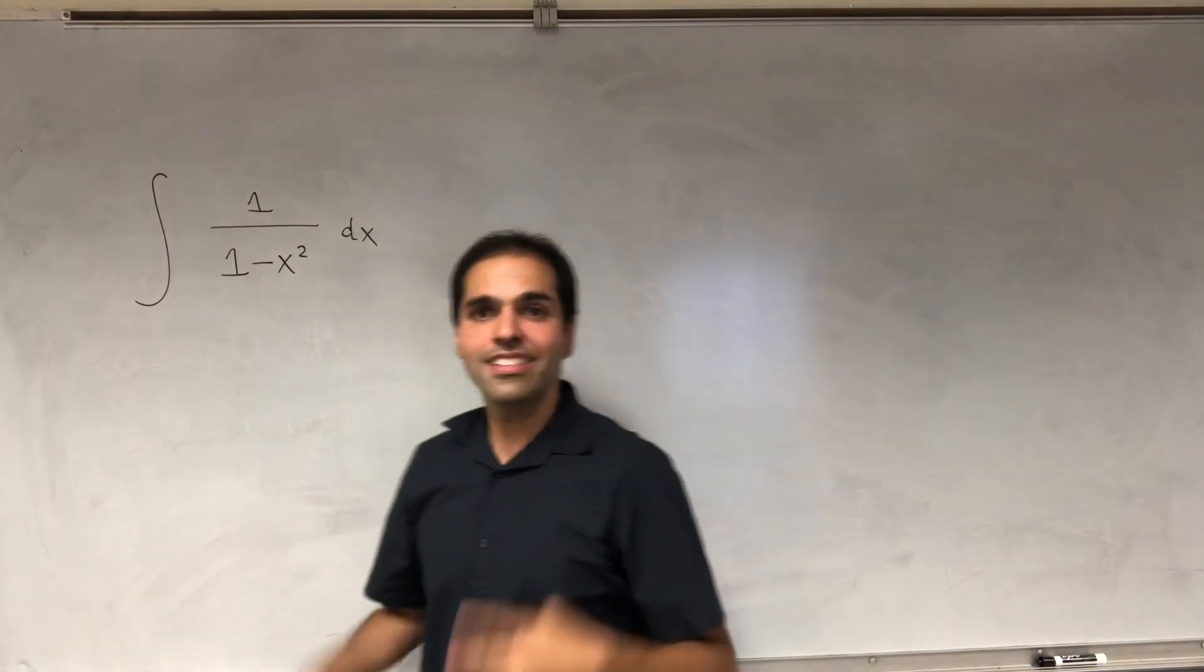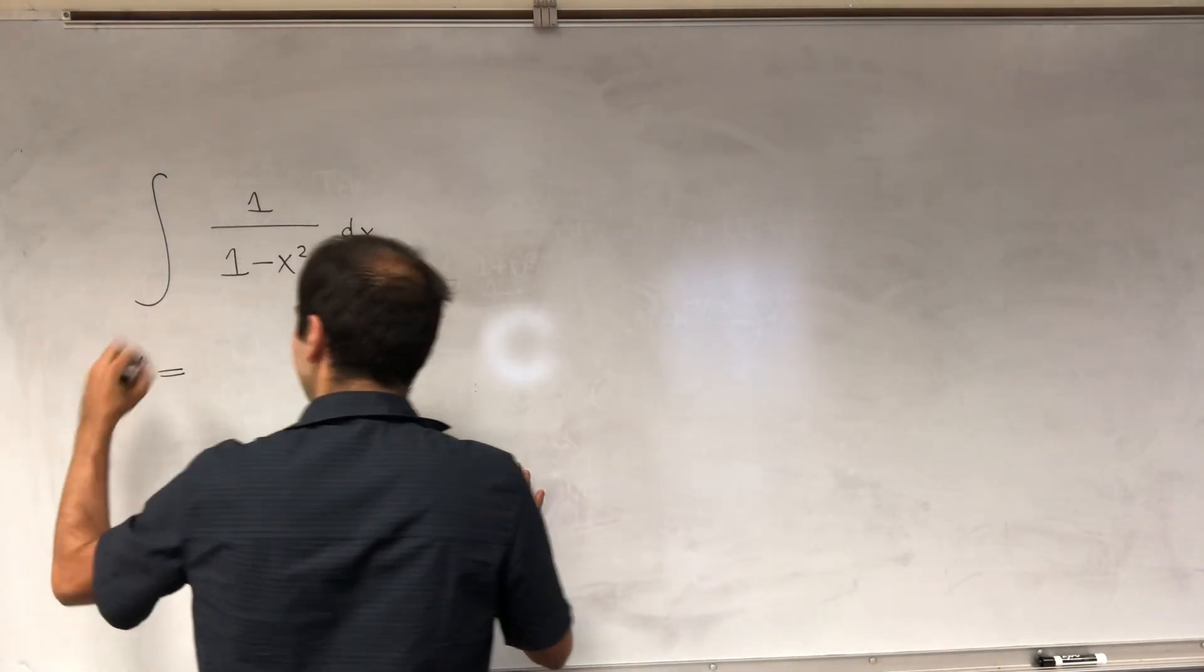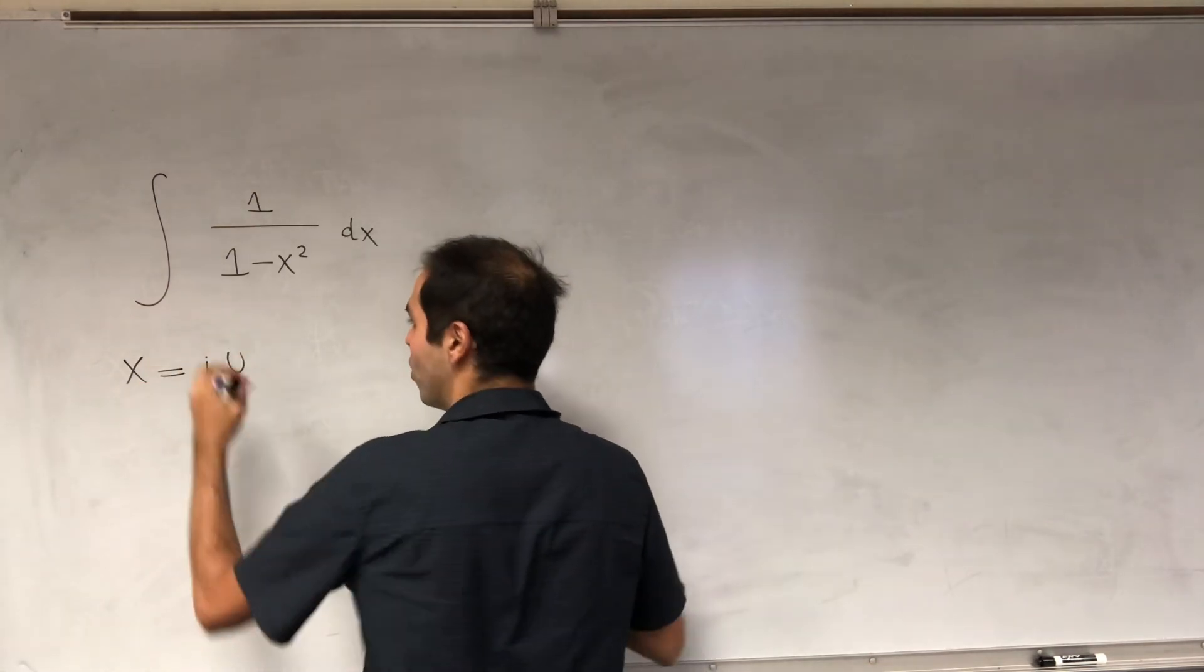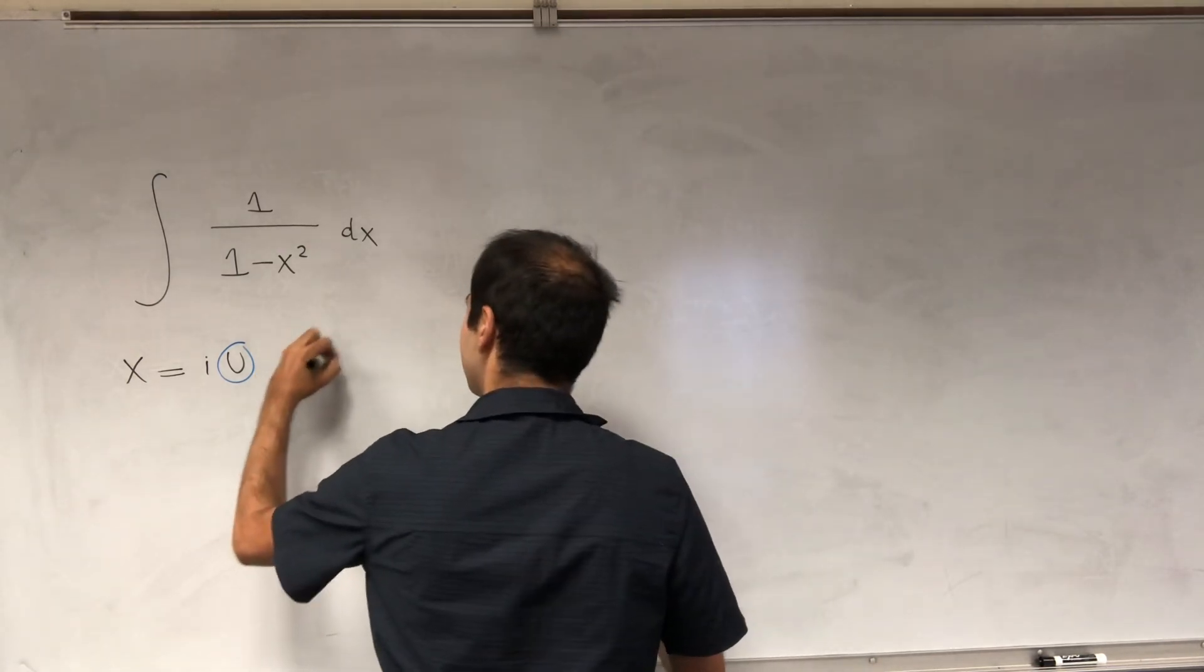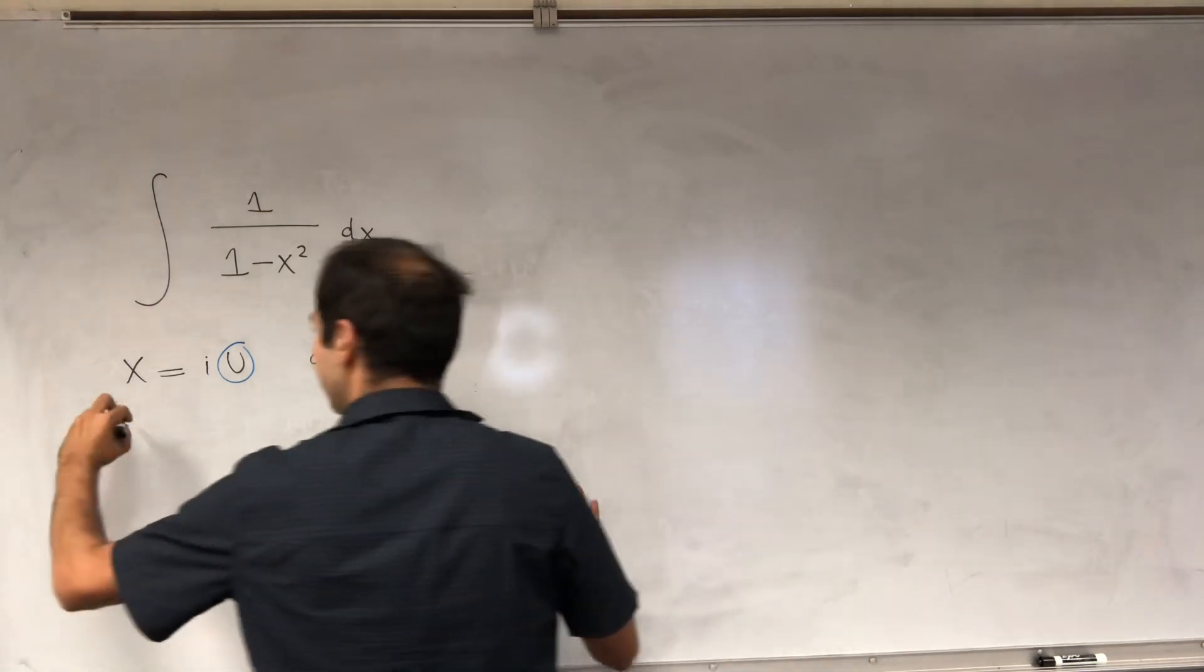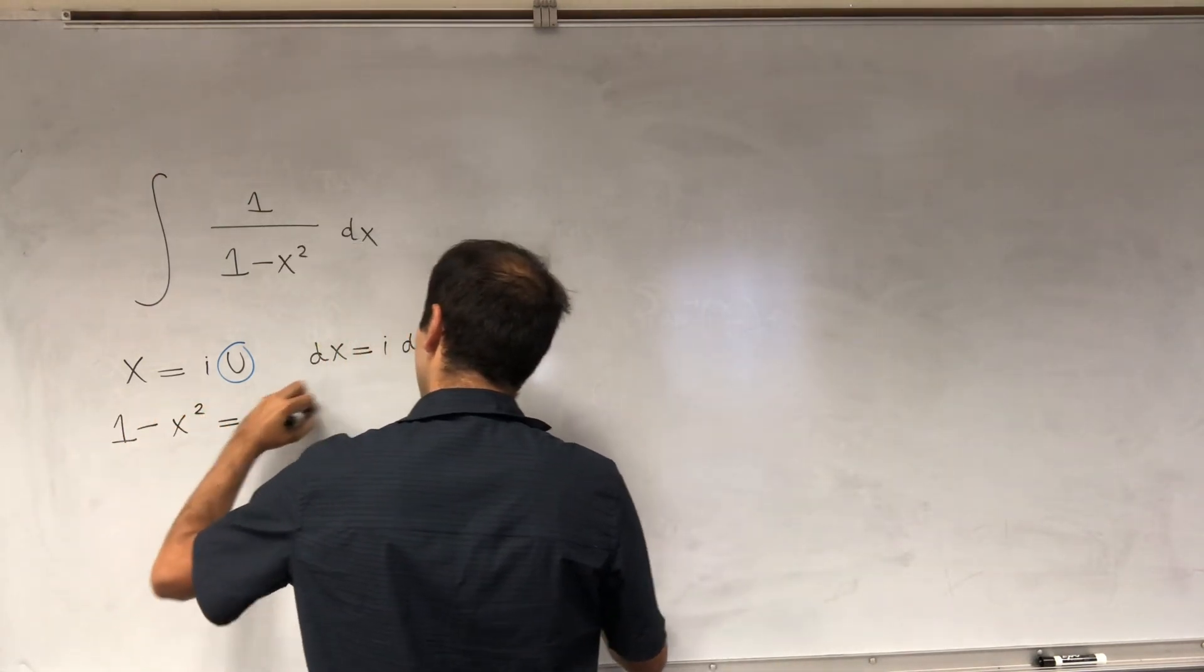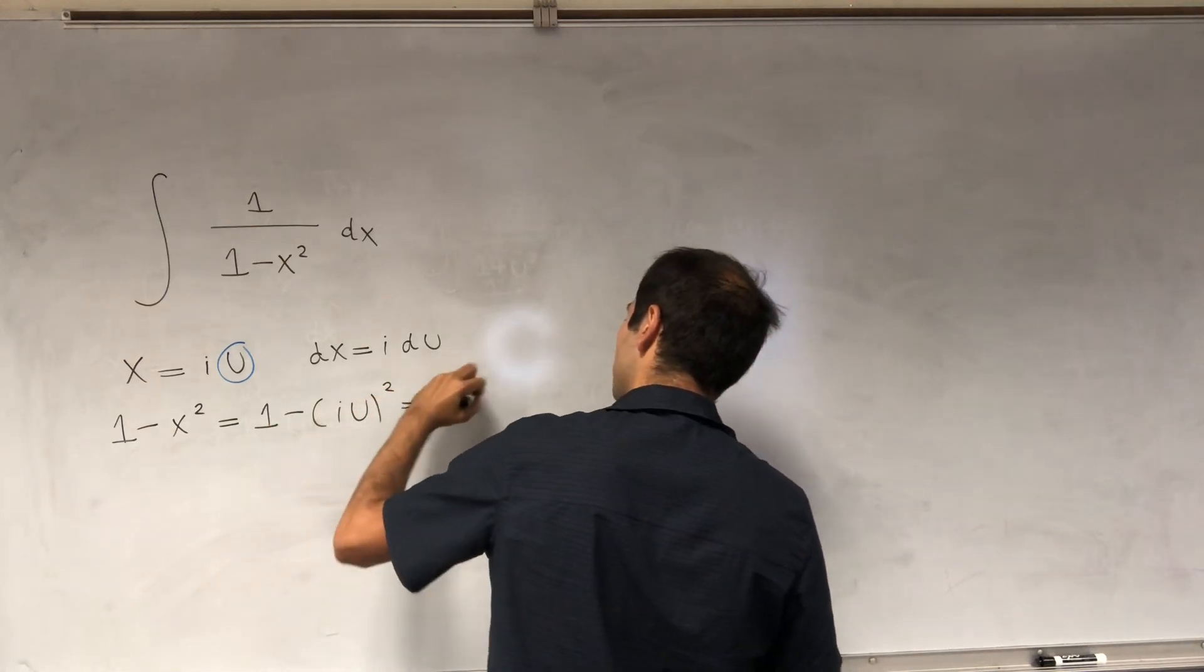More precisely, let's define u implicitly as follows. Let's define u via x equals iu, or if you want u equals minus ix, then dx is i du. And the nice thing is, 1 minus x squared becomes 1 minus iu squared, and that is 1 plus u squared.